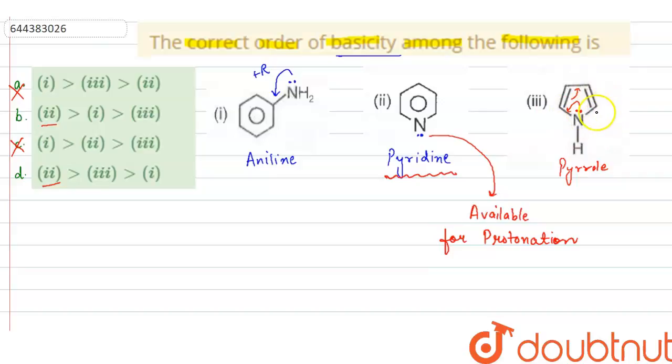And it will become unstable. So aniline will be more basic in comparison to pyrrole. So if we look at the options, first should be more basic in comparison to third and it is given in option B. First is more basic than third.